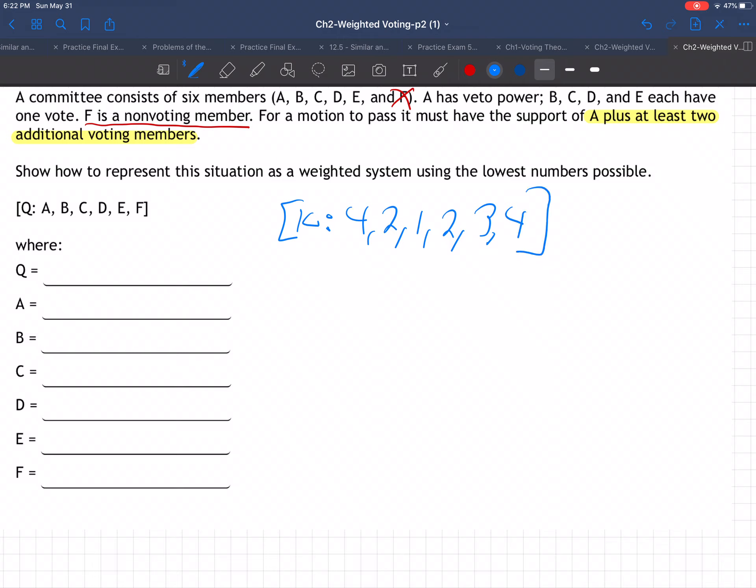They want us to set up some kind of situation, some kind of number for the quota, number of votes for A, B, C, D, E, and F, so that the number situation will be the same as the words, the rules they're giving us. How can you make numbers that'll play out exactly the same as these words? These are kind of tricky.